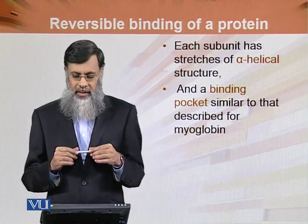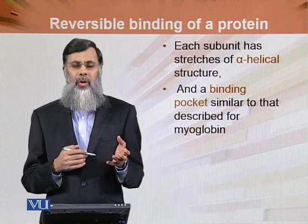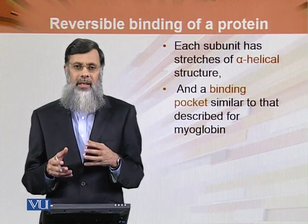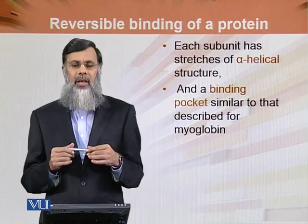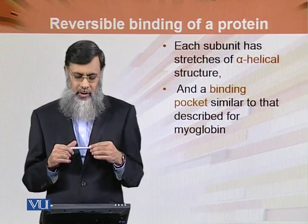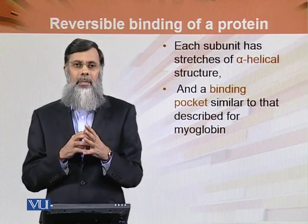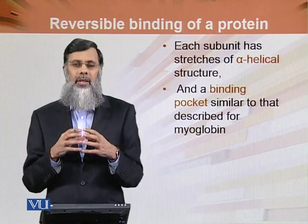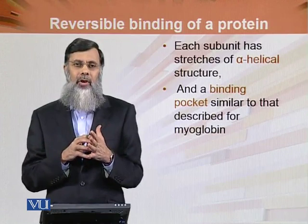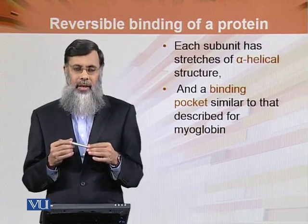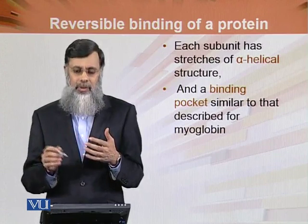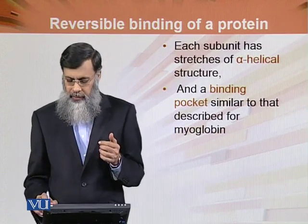Each subunit has the same alpha helical structure as myoglobin — mainly alpha helical structure with no beta-pleated sheets. There is a binding pocket similar to that described in the structure of myoglobin, which is the binding site for the heme group.